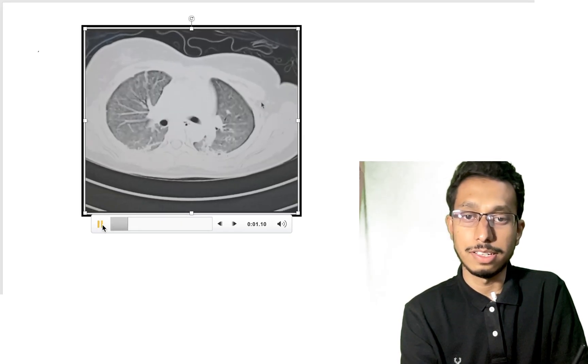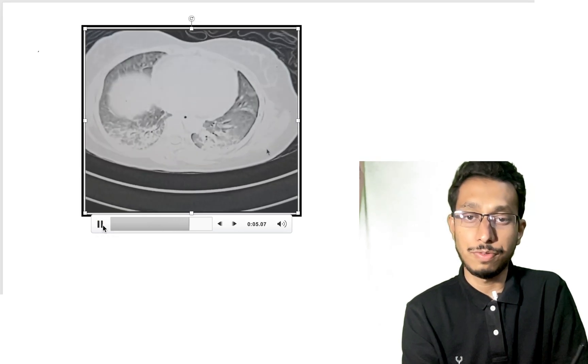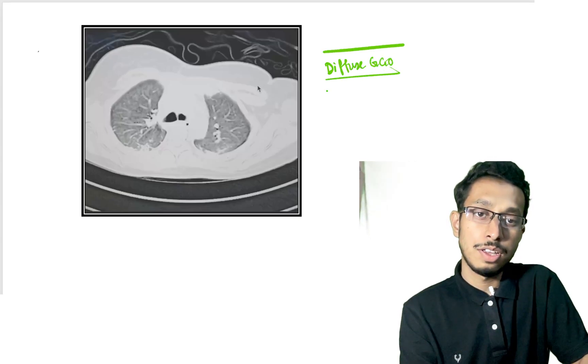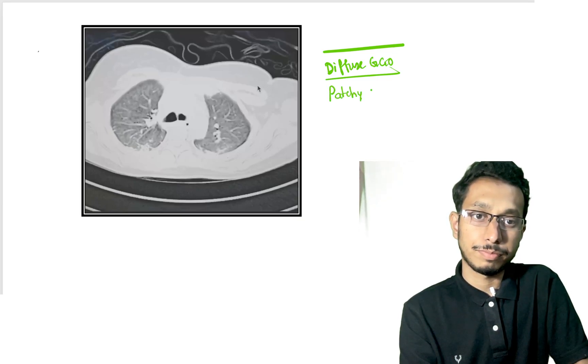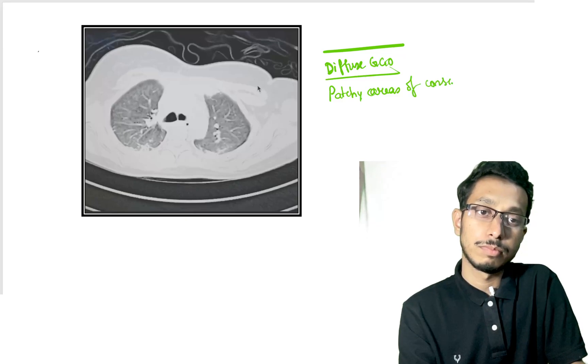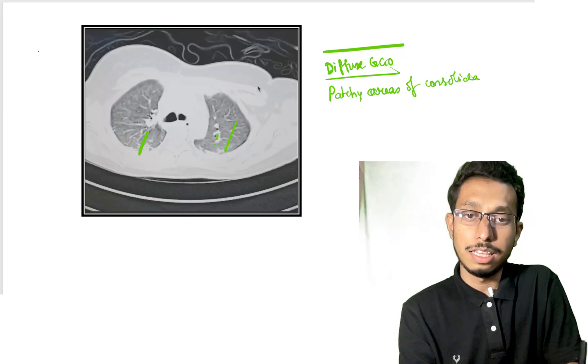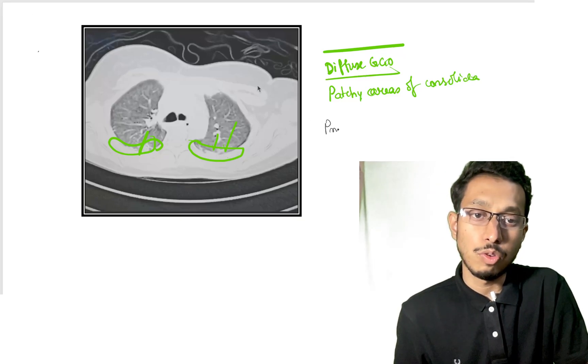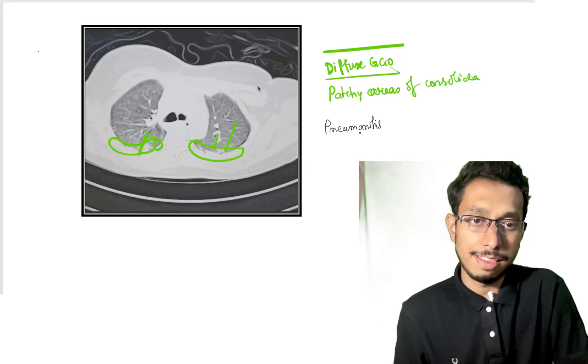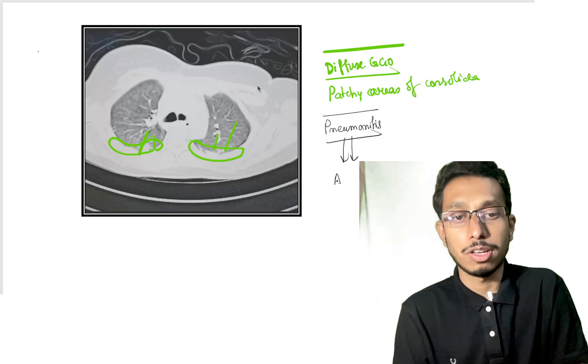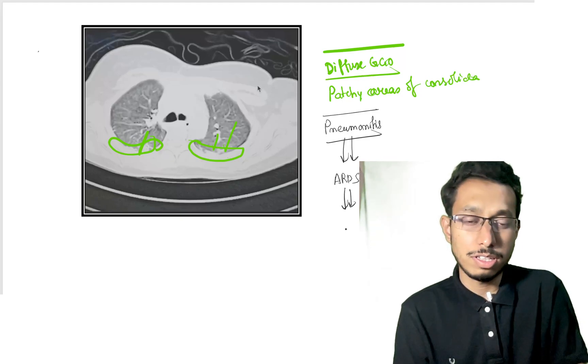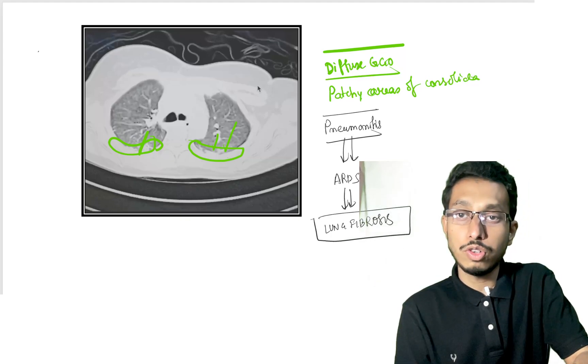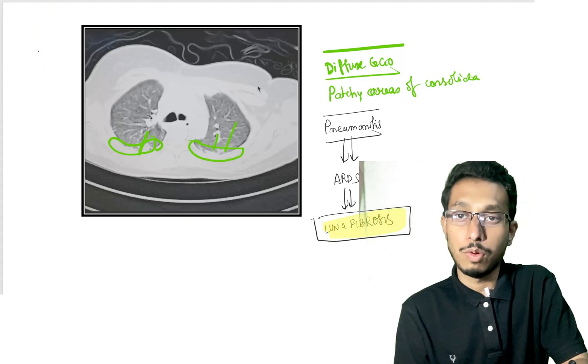If you check this HRCT imaging of lung effects from paraquat poisoning, you can see diffuse ground glass opacity in both lung fields as well as patchy areas of consolidation in both lung fields, mainly in the basal and inferior segments. All of this are initial features of pneumonitis occurring during the first one to four days. Later within a week it progresses to ARDS, and within three to four weeks it progresses to lung fibrosis. Lung fibrosis is the most common cause of death in paraquat poisoning.